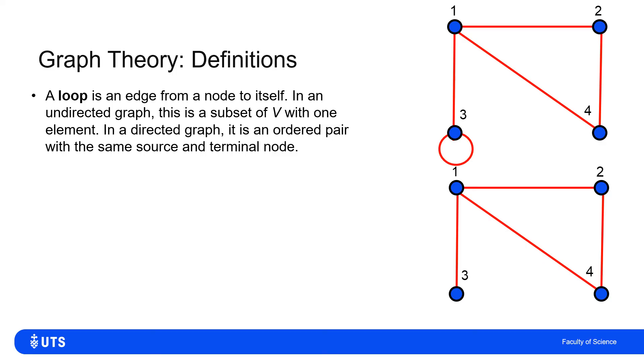For our last couple of definitions, well, we've got a loop which is probably exactly how you would think it. So in an undirected graph, I only need to define one node, because that node will be both the start and the end of the edge.